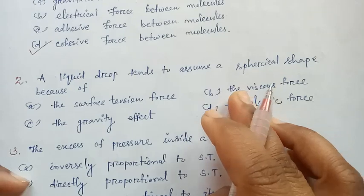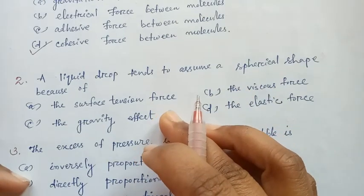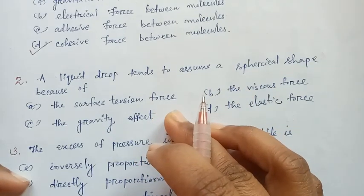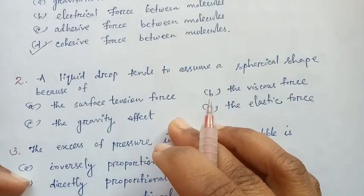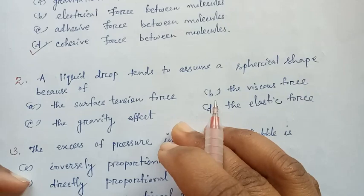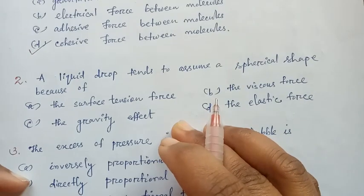Next: a liquid drop tends to assume a spherical shape because of — surface tension force, the viscous force, the gravity effect, or the elastic force. It is due to surface tension, so option A.